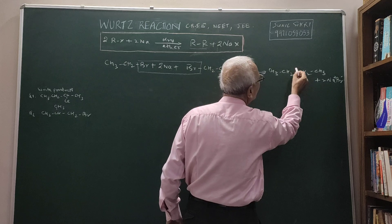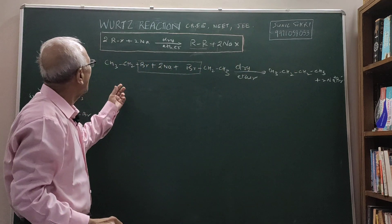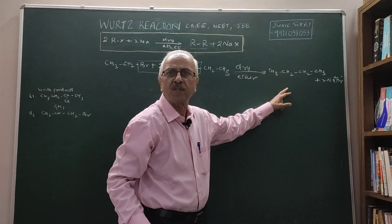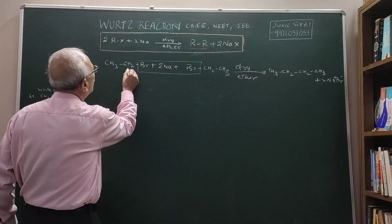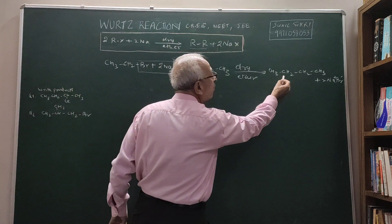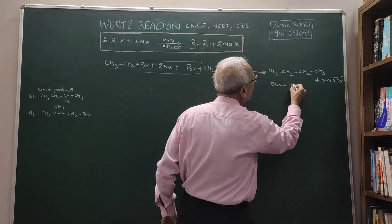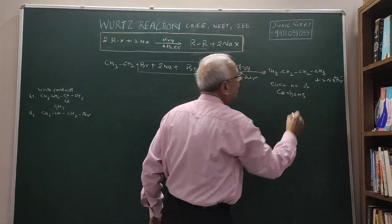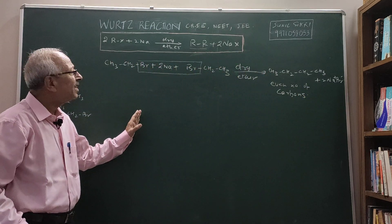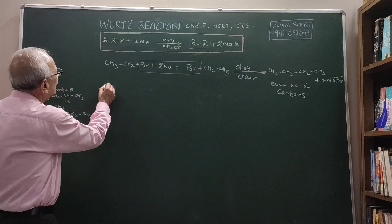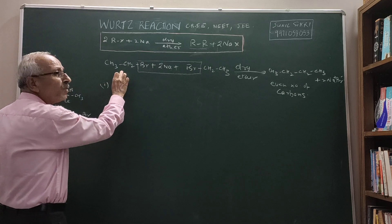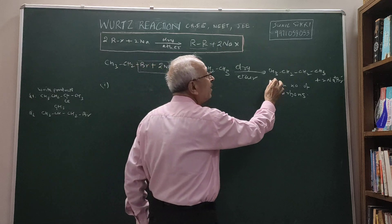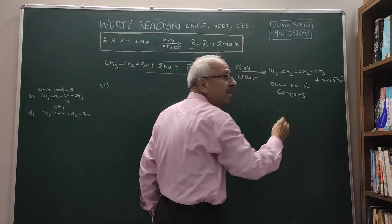So we find that coupling has taken place, and you can see that we are getting an even number of carbons. If I have two carbons, I am getting four carbons. You are always going to get an even number of carbons in the product. The important point is that if you use symmetric alkyl halides, the yields are better, and you get double the number of carbons.